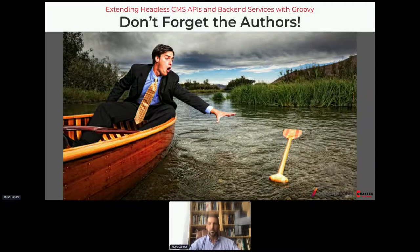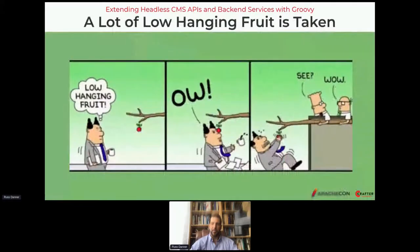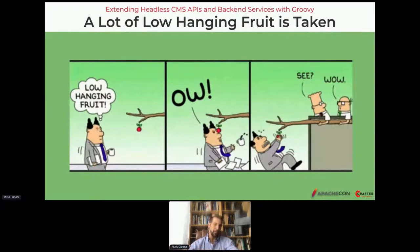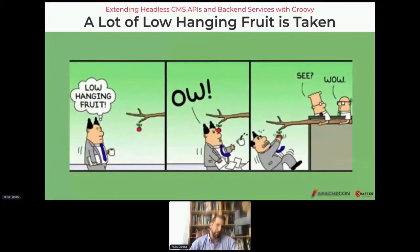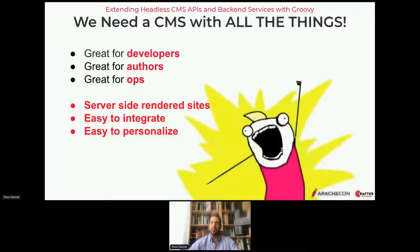The low-hanging fruit with headless CMS has kind of been picked: simple content entry forms, simple repositories, simple fixed APIs can't really carry us forward. Even in spaces that were acceptable as MVP before really now need to grow and have more tooling — people want metrics on how things are being used, and more. We're at the point where we really need a CMS to evolve again.